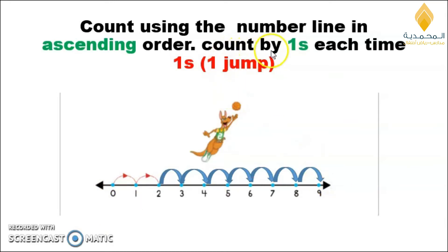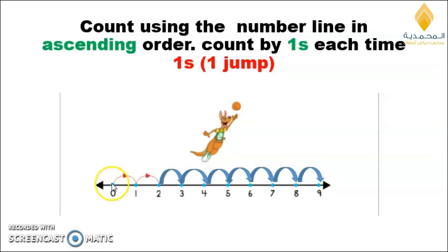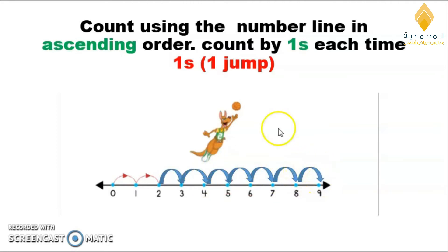What does count by ones mean? Count by ones means one jump each time. If you want to count in ascending order by ones, it goes like this: 0, 1, 2, 3, 4, 5, 6, 7, 8, 9. This is counting by ones.